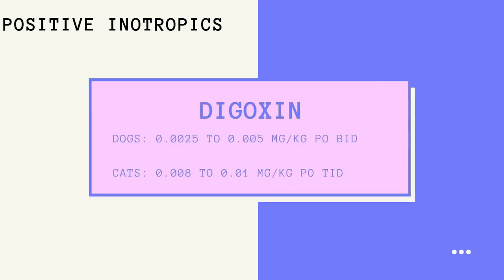Digoxin is a positive inotropic agent that mildly strengthens heart muscle contractions. It also moderates the excess neurohormonal activity that occurs with heart failure and helps control certain heart rhythm abnormalities. This drug is not necessarily indicated for use in every case of heart failure. Digoxin is best given on an empty stomach since food, as well as antacids and kaolin pectin compounds, decrease drug absorption.